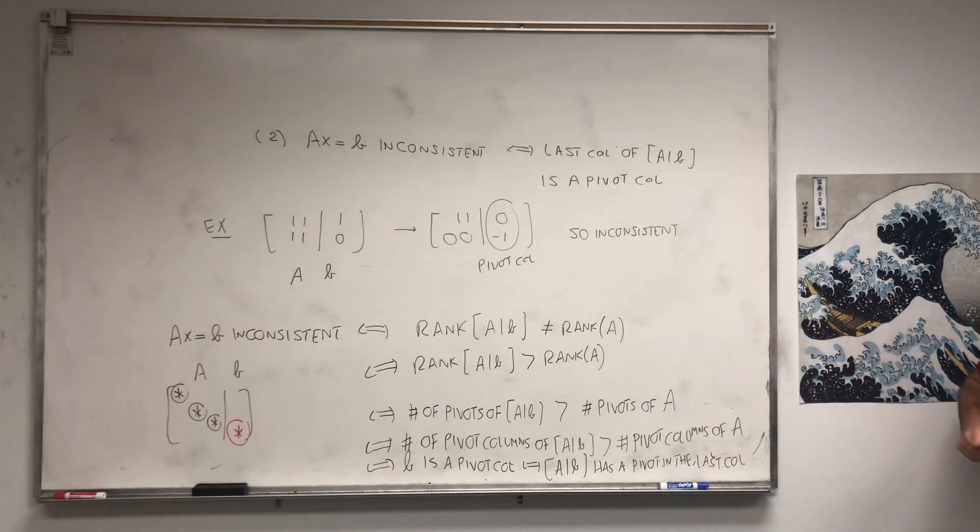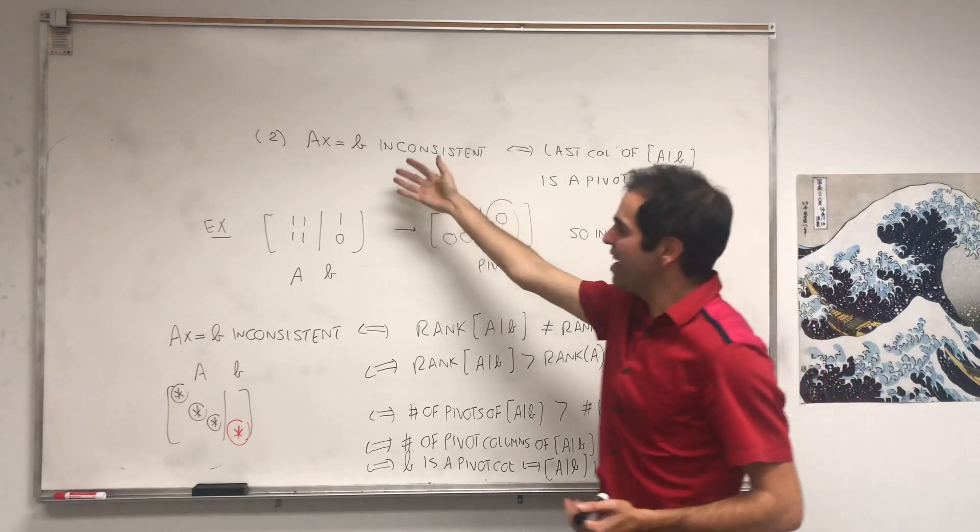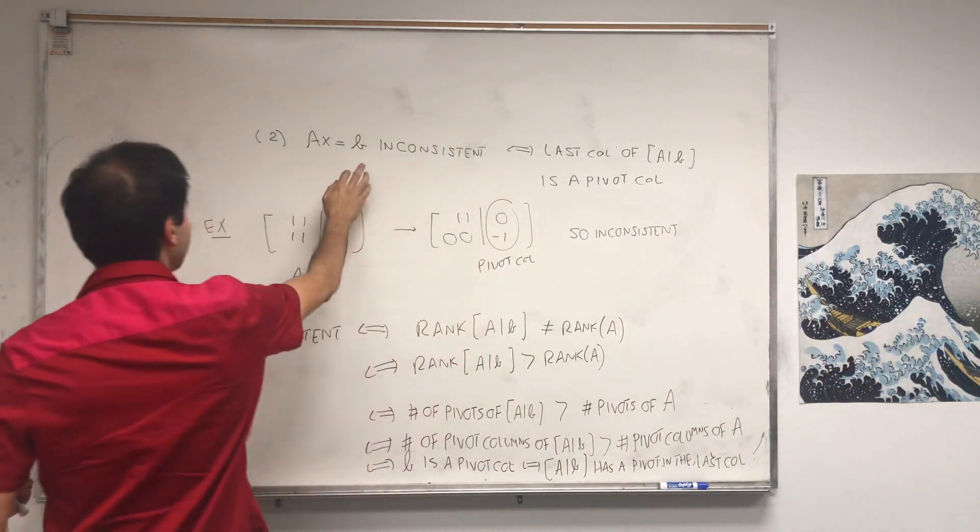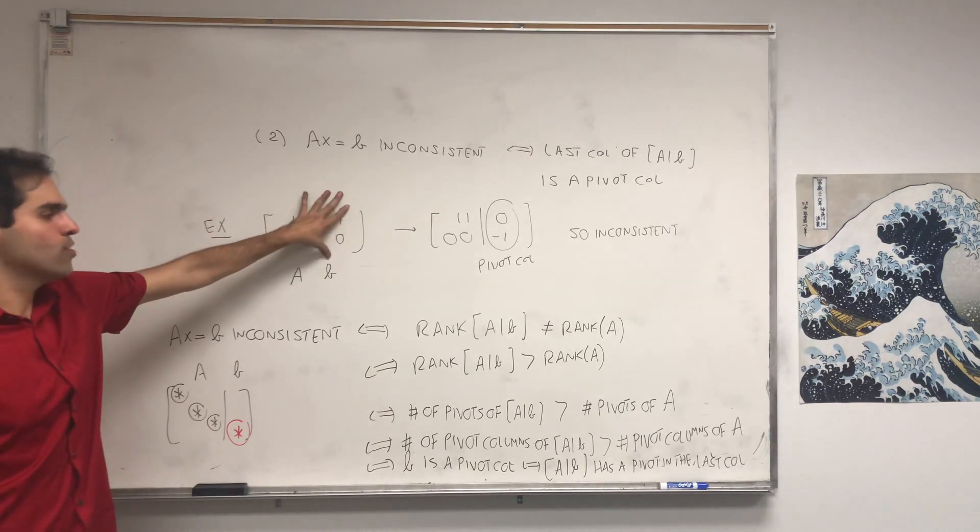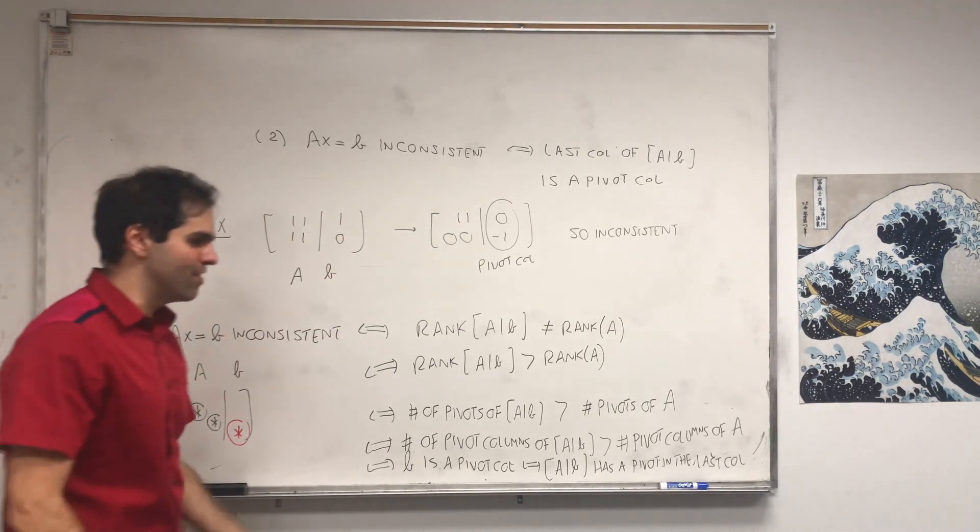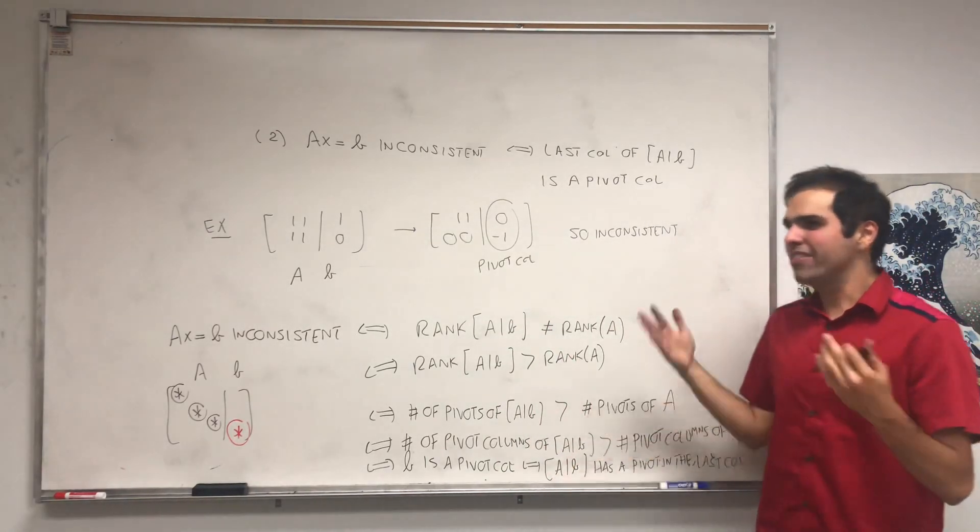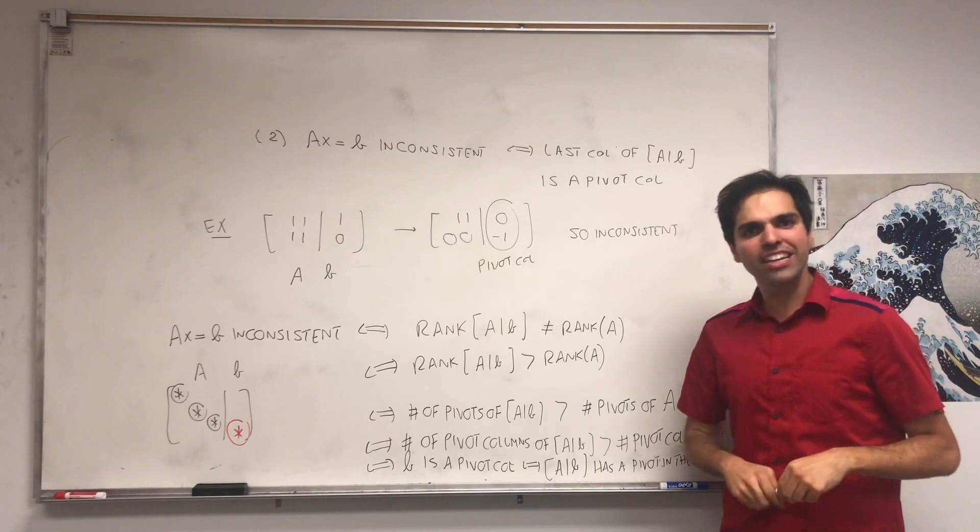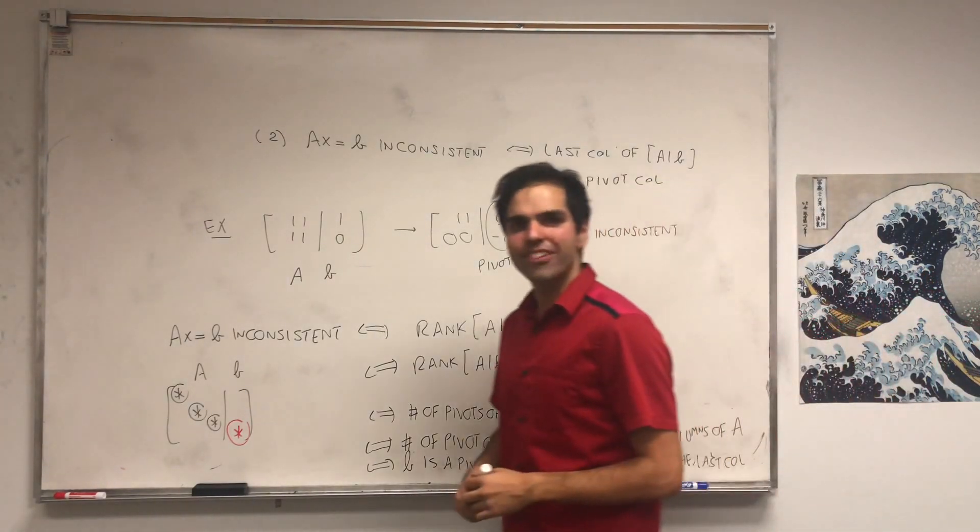So this is neat, again, just a very nice application of this rank criterion, but you can do it other ways if you want. You know, if AX equals B is inconsistent, B is not in the column space of A, and that kind of forces the last column to be a pivot column. So there are many ways and I hope you like this video and if you want to see more math and more linear algebra, please make sure to subscribe to my channel. Thank you very much.